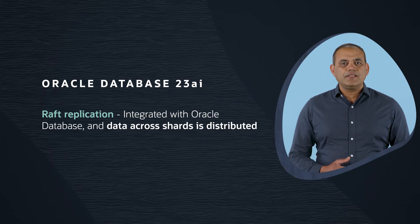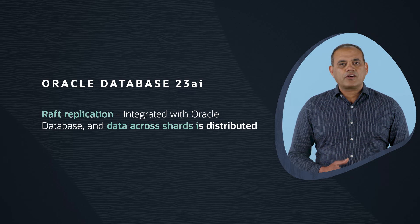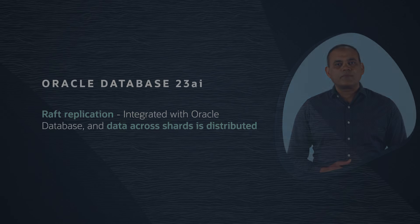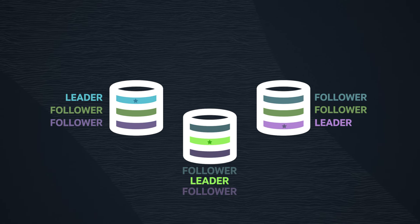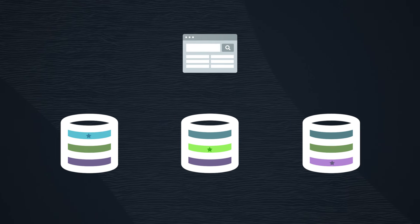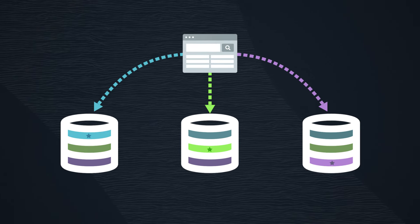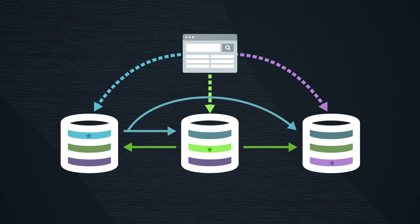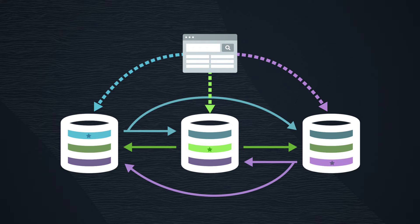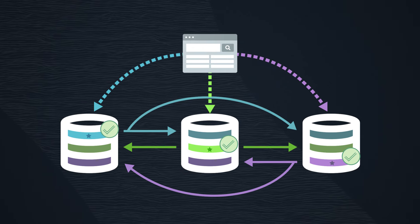Raft replication is integrated with Oracle Database, and data across shards is distributed. Each shard acts as a leader for a portion of data and a follower for other portions of data. Application requests are automatically routed to the leader shard, and the leader shard replicates the data to all the followers in parallel. The leader commits the transaction only when a quorum is established, meaning the majority of the followers acknowledge the receipt of the data. This is designed to help ensure zero data loss.